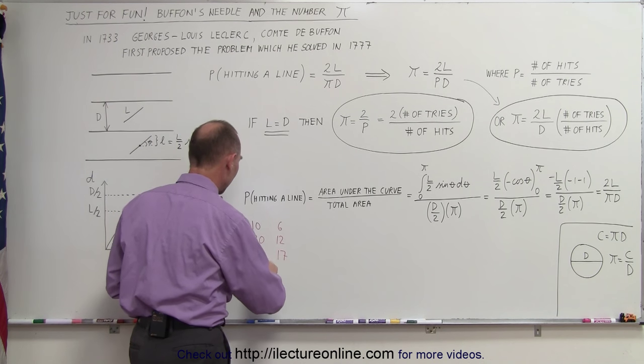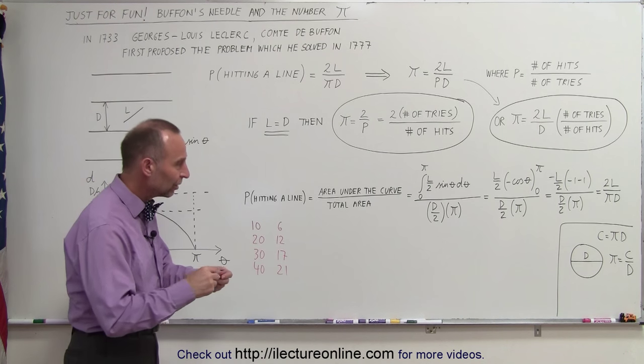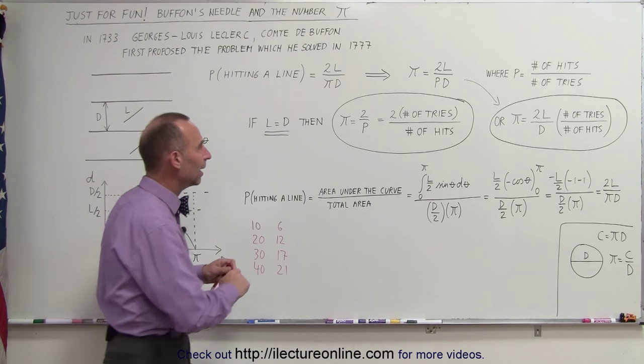Out of 20 needles, we got 12 hits. Out of 30 needles, we got 17 hits. And out of 40 needles, we got 21 hits. Let's plug that into the equation and see what we get for the number pi.